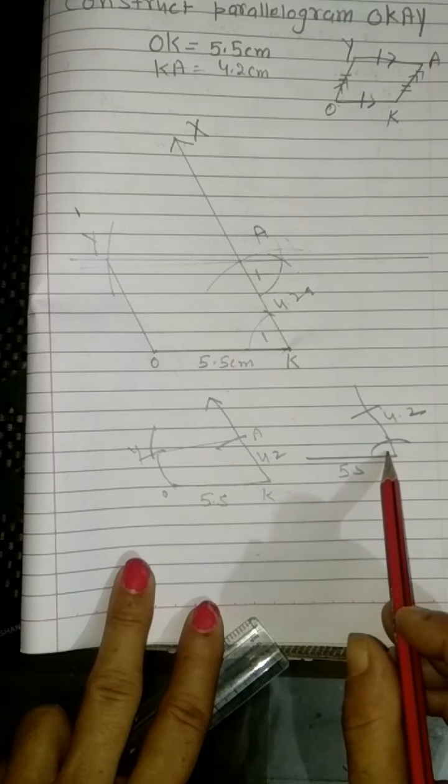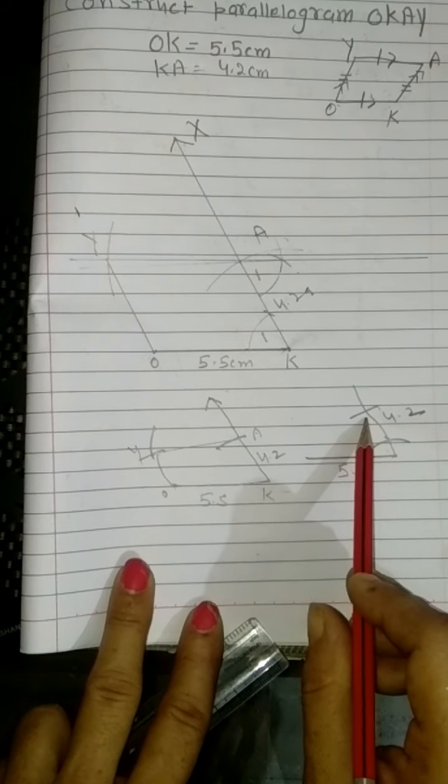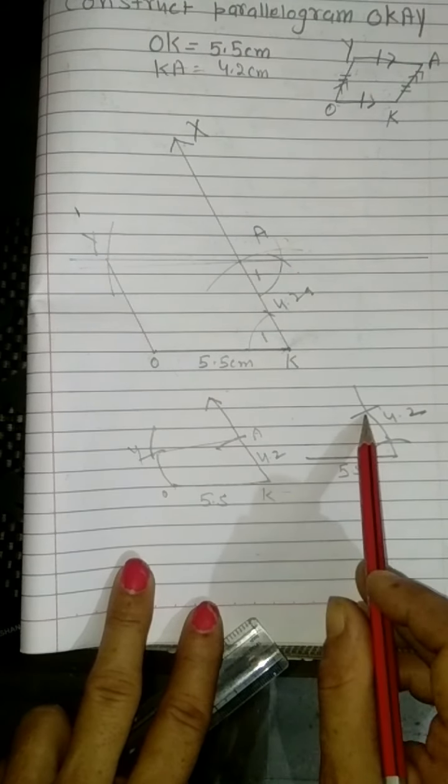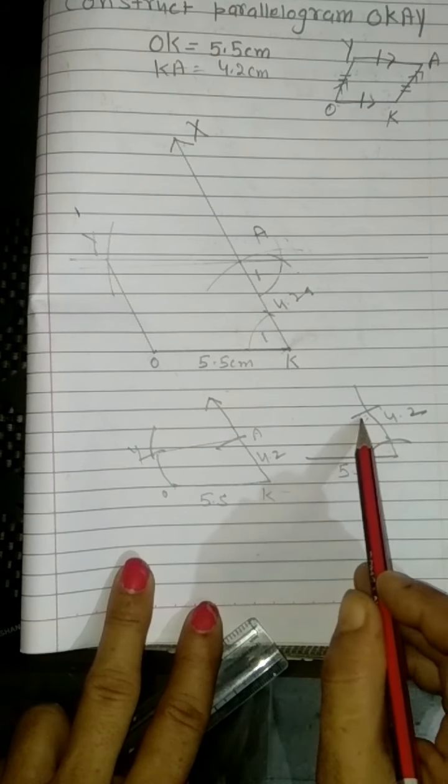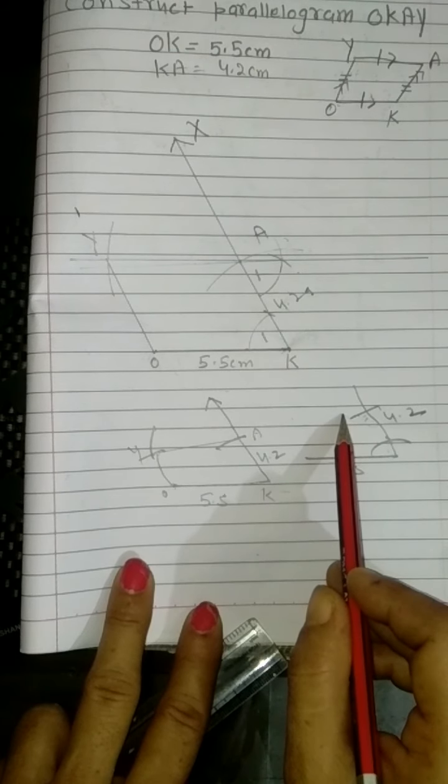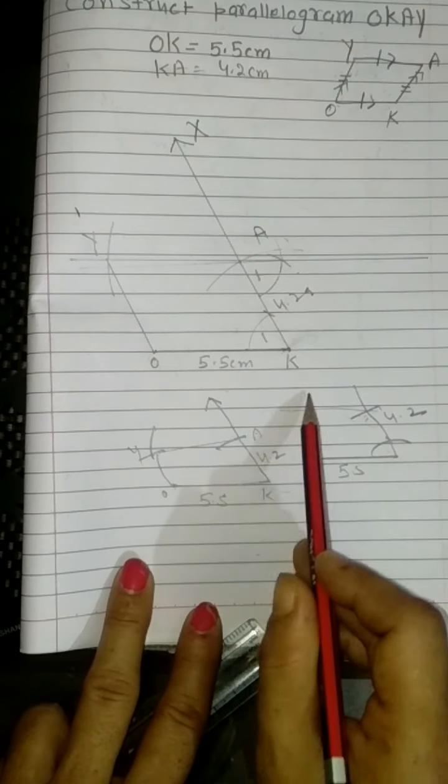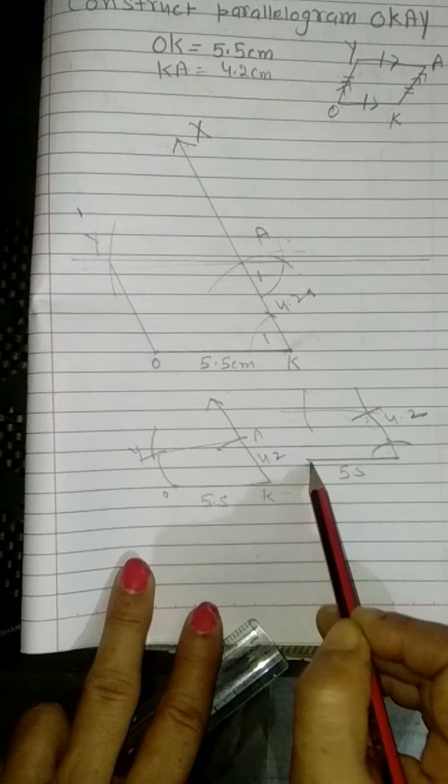Then this is 60. Then here I have to take 120 because co-interior angles equal 180. So here I will draw what angle? 120 degree angle. So in this way from that ray I will cut here 5.5 cm, join this, and we're done.